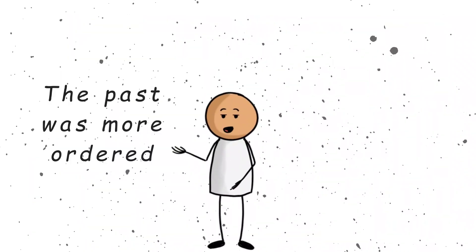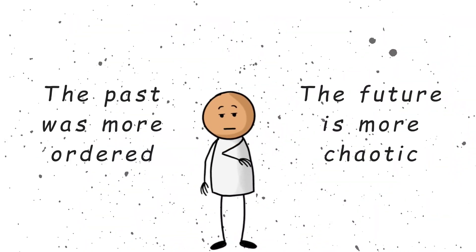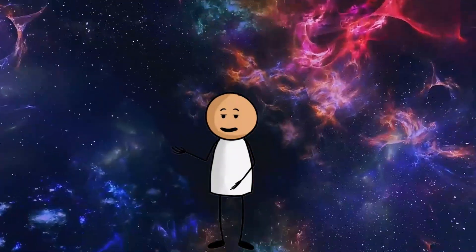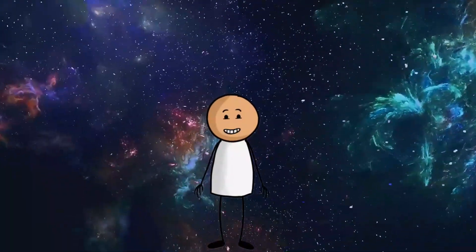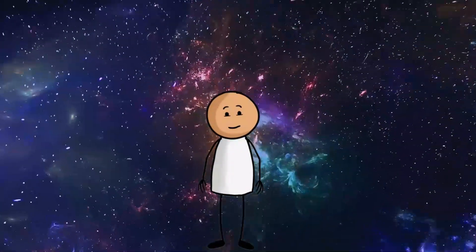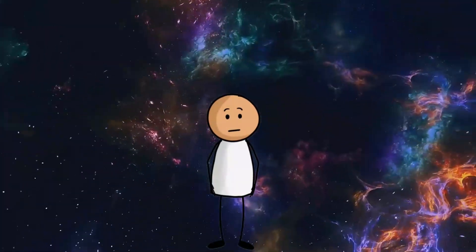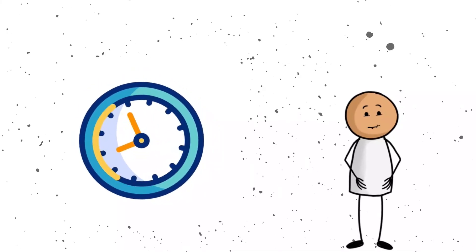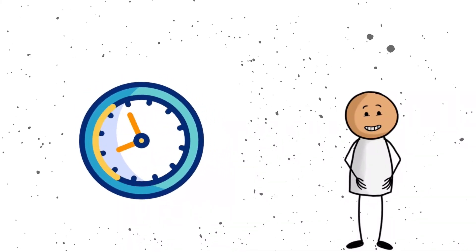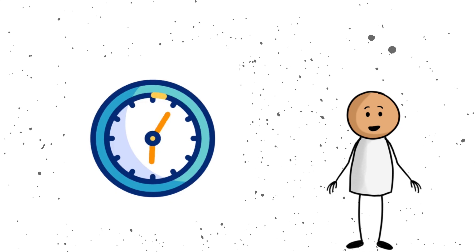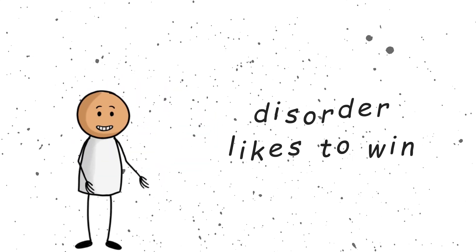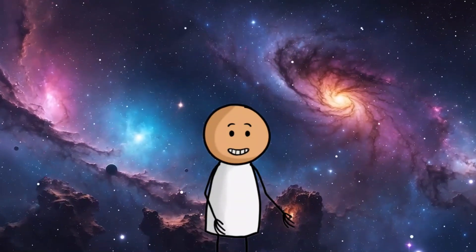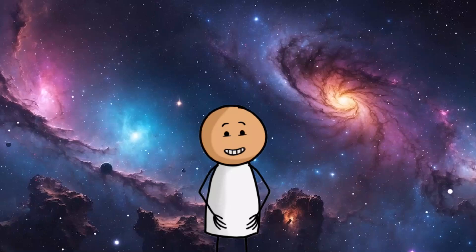Now here is the tricky question. Why did the universe start in such a super tidy, low-entropy state? Because if it started messy, we might not even be here to wonder about it. Scientists have been scratching their heads about this one for a long time. So while the laws of physics do not care if time runs forward or backward, the universe itself gives time a one-way ticket, because disorder likes to win. You can think of the arrow of time as the universe's way of making sure things do not get too out of hand. Or maybe it just wants to keep us on our toes.